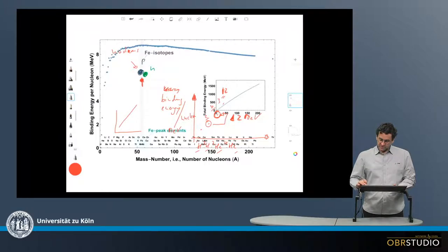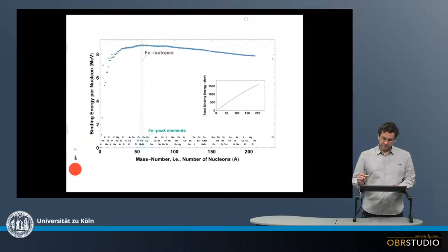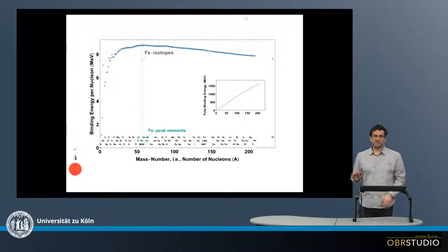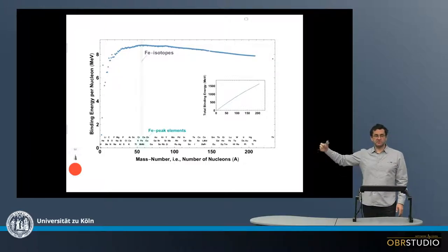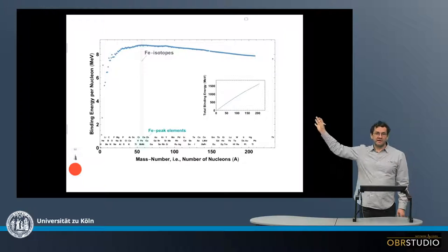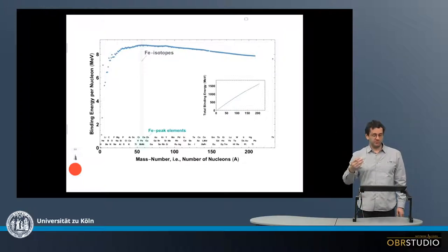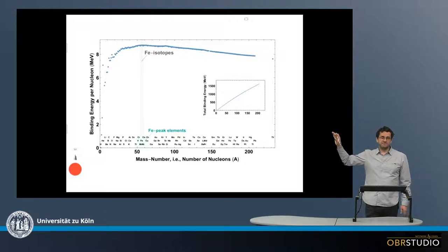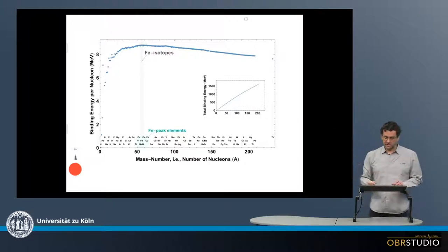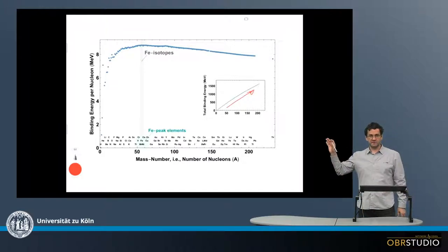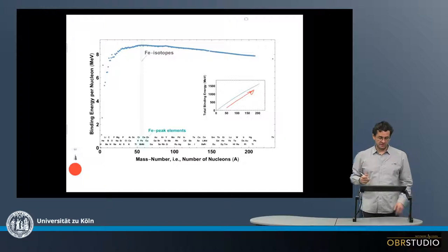So let's look at the corresponding plot here. It's exactly the same plot I just showed you. On the x-axis, there is the mass number, so the number of nucleons. And on the y-axis is the binding energy per nucleon in mega electron volts. And then there is an inset that shows the total energy of the core. And as I just said, this is always increasing here.